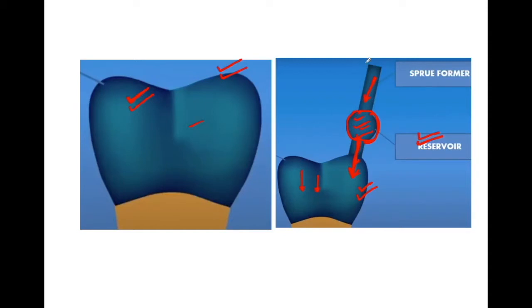In this topic, lots of questions are asked in exams. For example: what should be the length of the sprue former, its diameter, angulation, reservoir, direct or indirect type, and the type of sprue former. All these questions will be discussed in detail in further slides.